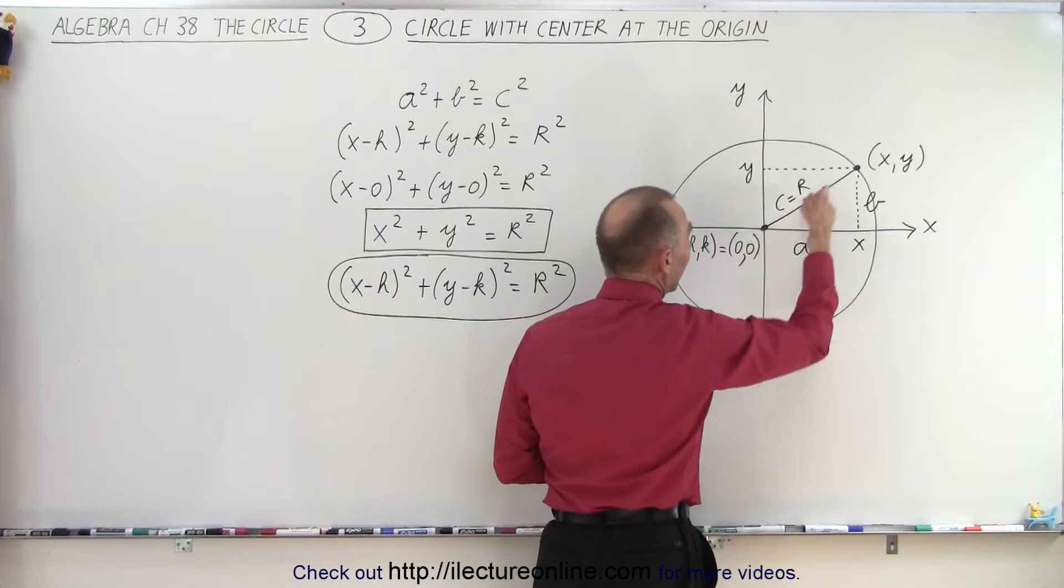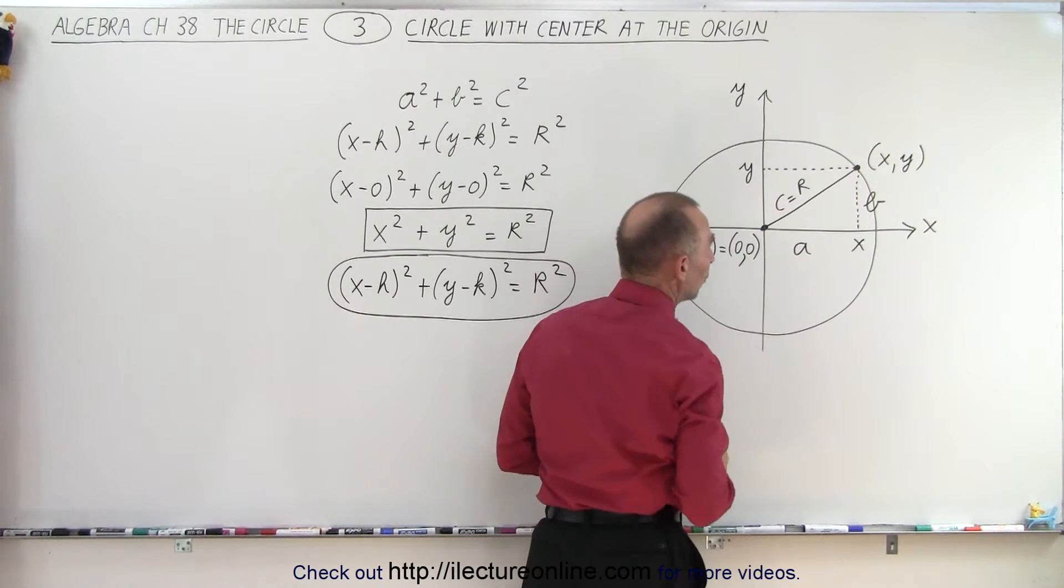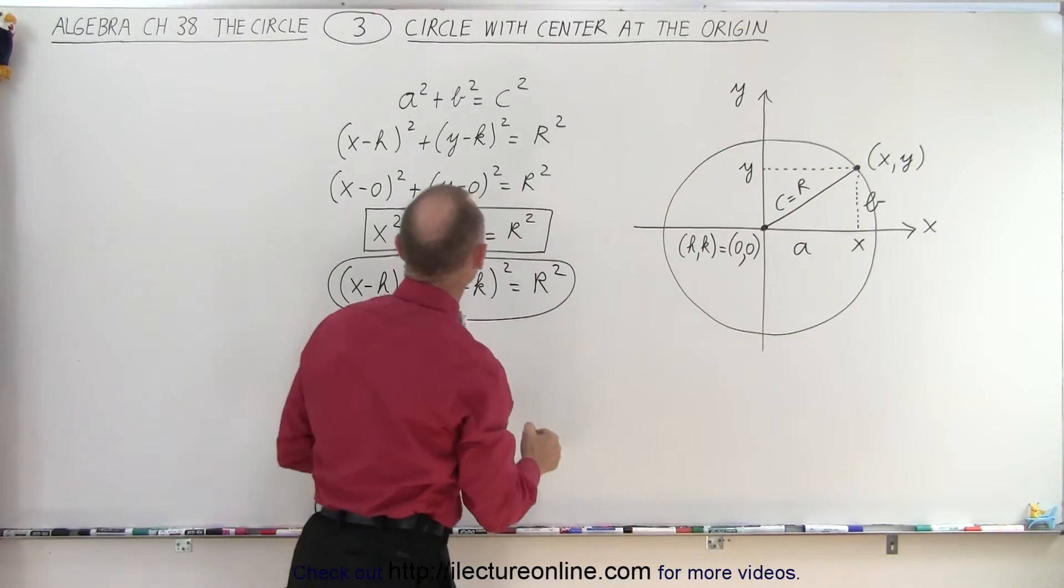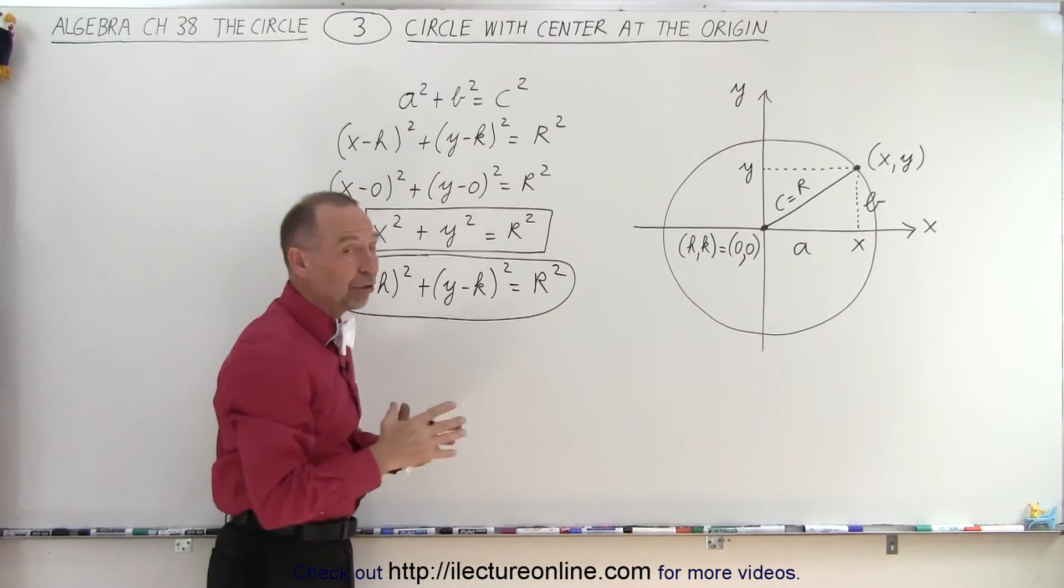And then the hypotenuse c is equal to the radius of the circle. We still get a squared plus b squared equals c squared, and so that's the basis of our equation for the circle.